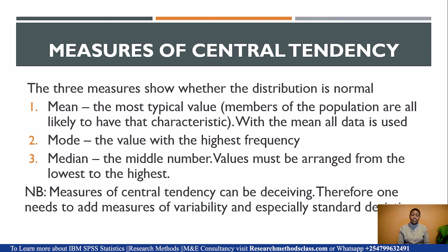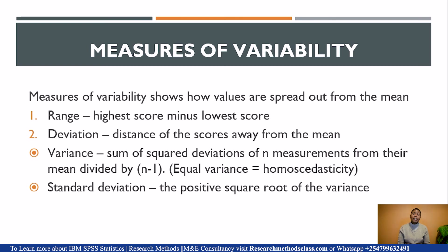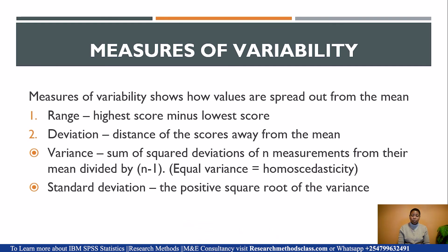Mean is the most typical value, mode is the value with the highest frequency, whereas median is the middle number. To determine the median, you must arrange the values from lowest to highest. Measures of central tendency on their own can be misleading because they are affected by extreme values. Therefore, it is important to combine them with measures of variability, especially the standard deviation. Measures of variability tell us how values are spread from the mean. Range is the highest score minus the lowest score. Deviation is the distance of scores from the mean. Variance is the sum of squared deviations, whereas standard deviation is the positive square root of the variance.